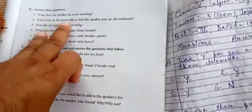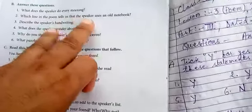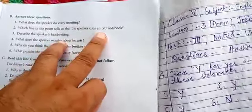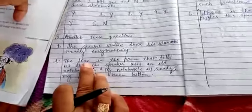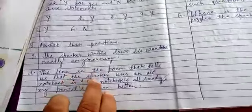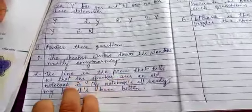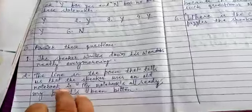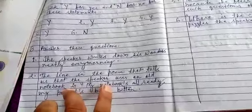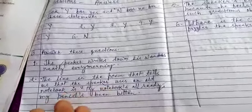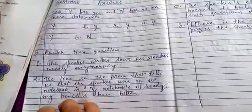Which line in the poem tells us that the speaker uses an old notebook? Here write down the answer. The line in the poem that tells us that the speaker uses an old notebook is my notebook is already, my pencil has been bitten.